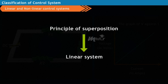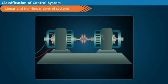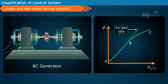To understand the non-linear control system, let us consider a DC generator which is running at no load. The magnetization curve which is plotted against the air gap flux and the field MMF of the generator is shown.